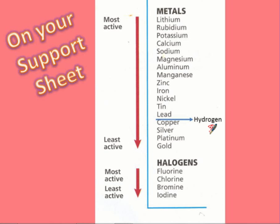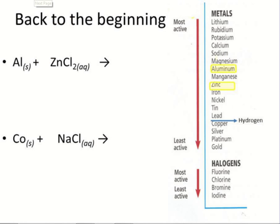So up top, the metals, lithium is the most active that we're going to worry about. Gold is the least active. And then for our halogens, fluorine, chlorine, bromine, iodide. Remember, these will be on your support sheet, you'll have these at tests. No need to memorize them, but it is good to know them.